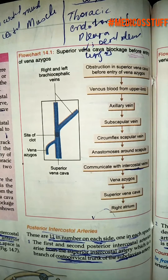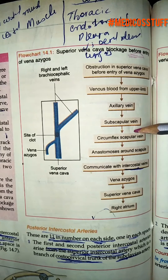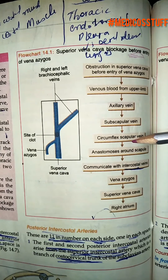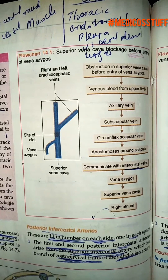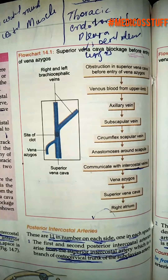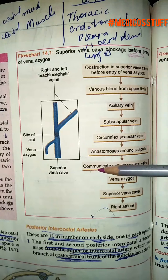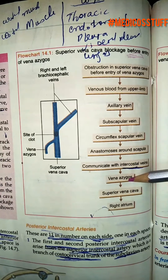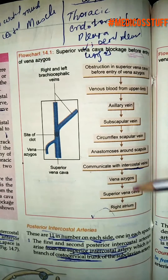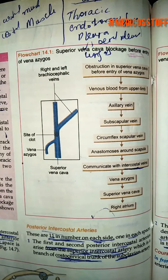In this case, blood from the upper limb goes into the axillary vein, then into the subscapular vein, after the subscapular vein it goes into the circumflex scapular vein, and then through anastomoses around the scapula. These anastomoses communicate with the intercostal veins, and from the intercostal veins the blood goes into the azygos vein, and then into the superior vena cava and right atrium.